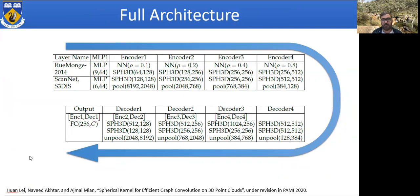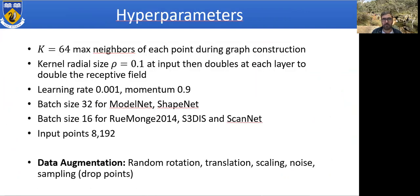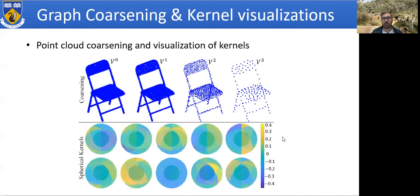Here is a more detailed architecture showing the exact number of feature maps at every layer — refer to the paper and implementation for details. The hyperparameters include a 64-max neighborhood to construct a graph, a current size of 0.1 meters for neighborhood search, a specific learning rate and momentum, and batch size of 32, or 16 for bigger datasets. Here is a visualization of the learned kernels, where we assign a heat map value to every bin to show the different types of 3D features being learned, along with the coarsening of the graph.